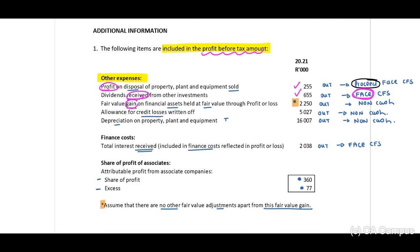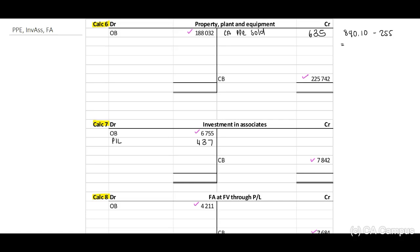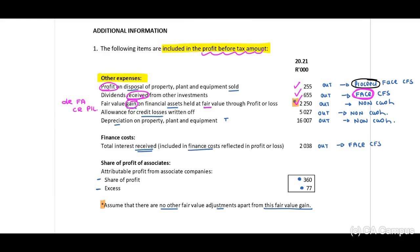We have a fair value gain on financial assets held at fair value through profit or loss. If this is a gain, we debit the financial asset and credit our profit and loss. We need to take this out — 2,250. We take out the fair value adjustment and transfer this to our financial asset T-account as a fair value adjustment of 2,250. Tick it off.